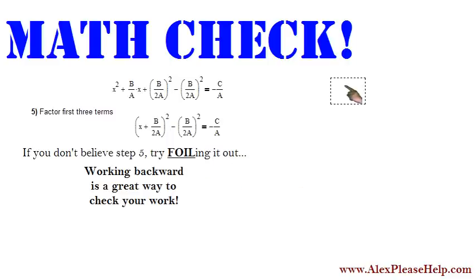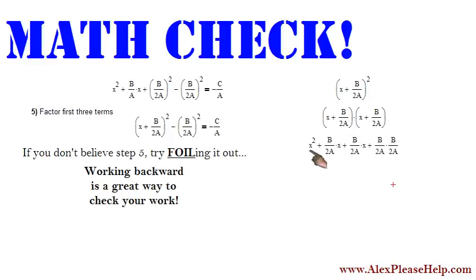So you take that little part right here, x plus b over 2a squared, and you foil it. If I can get my mouse working properly, you foil it. So then you get two binomials being multiplied by each other. You do the first outer inner last, where you have first terms equals x squared, outer b over 2a times x, inner b over 2a times x, and then b over 2a times b over 2a.